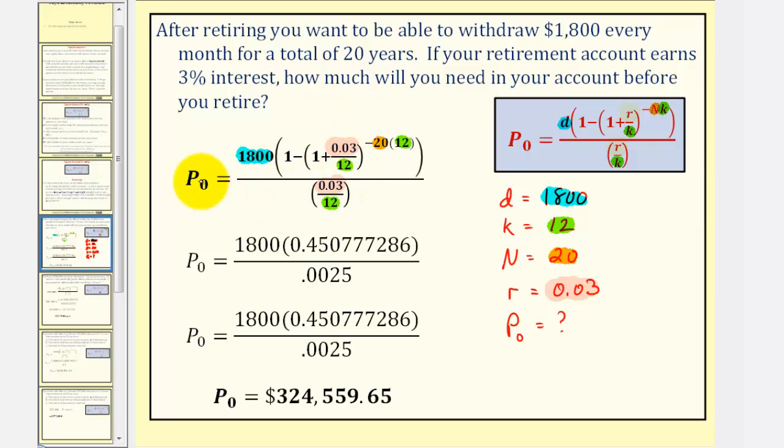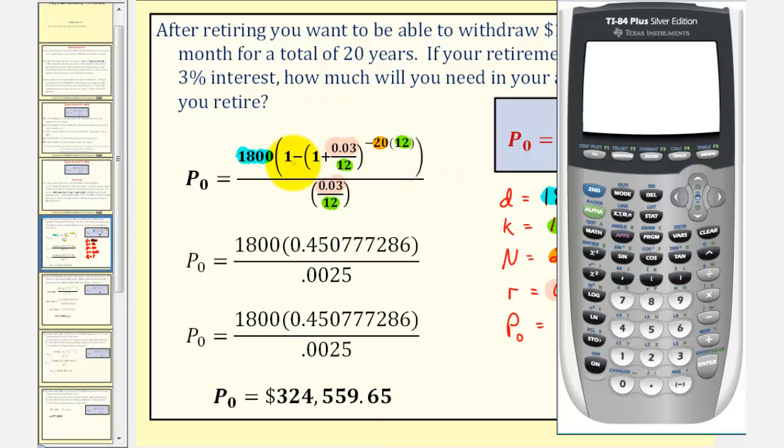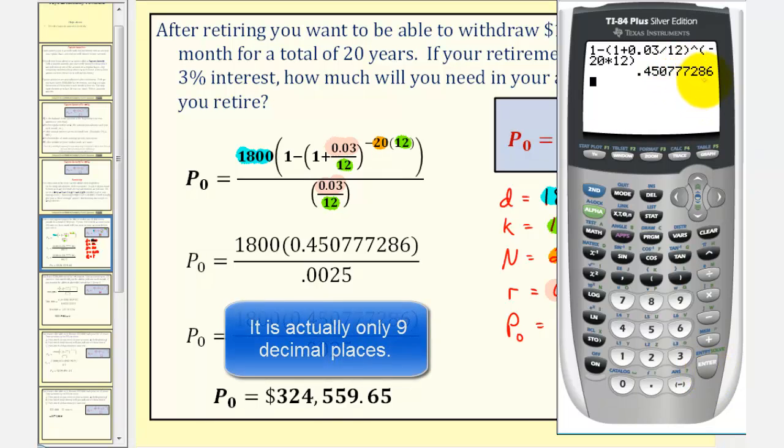Now we need to evaluate this to find P sub zero. It's hard to evaluate this all at one time in the calculator, so begin by evaluating the quantity in the numerator as well as the denominator. Evaluating the expression inside the parentheses in the numerator, we would have 1 minus the quantity (1 + 0.03/12), raised to the power of negative 20 times 12. Notice how I included all ten decimal places in the second step.